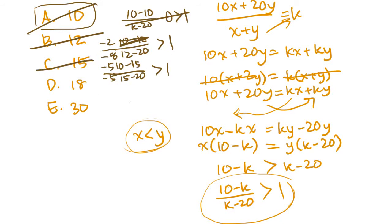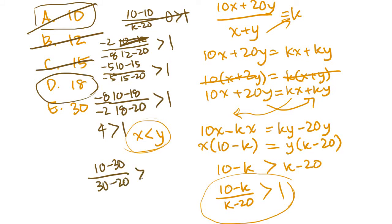Let's try 18. 18 would be 10 minus 18 over 18 minus 20 greater than 1. That's going to be negative 8 over negative 2. That's going to be 4. 4 definitely is greater than 1. So D is going to be the right answer. And just to make sure we didn't make a mistake, let me check out 30. 30 is going to be 10 minus 30 over 30 minus 20, negative 20 over positive 10. That's going to be negative 2. And that is definitely not greater than 1. So D is definitely the right answer.